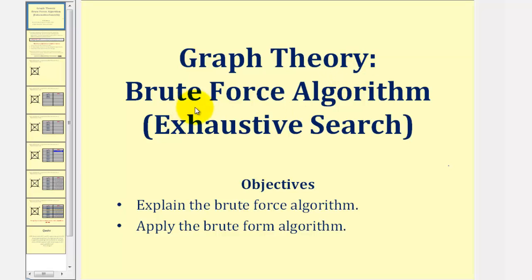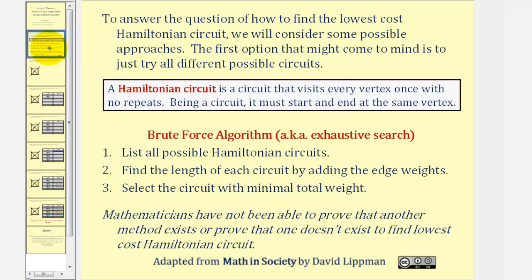Welcome to a lesson on the brute force algorithm in order to find the lowest cost Hamiltonian circuit. To review, a Hamiltonian circuit is a circuit that visits every vertex once with no repeats. Being a circuit, it must start and end at the same vertex.